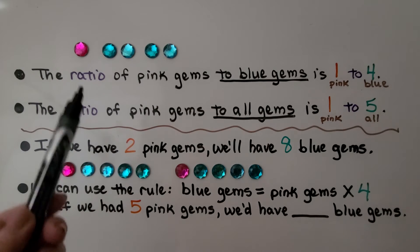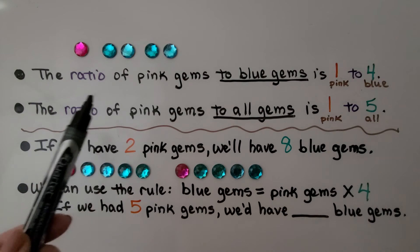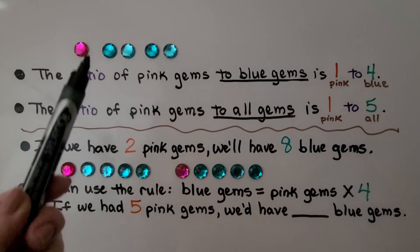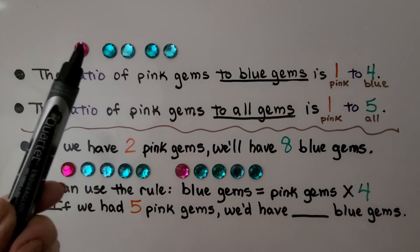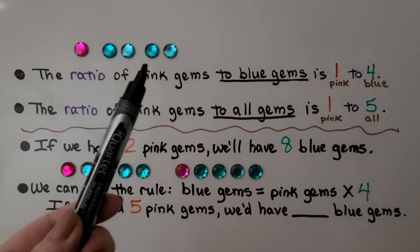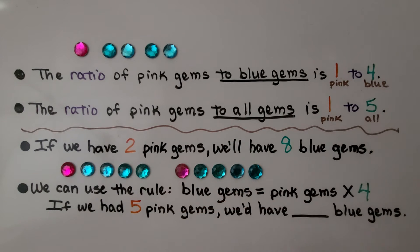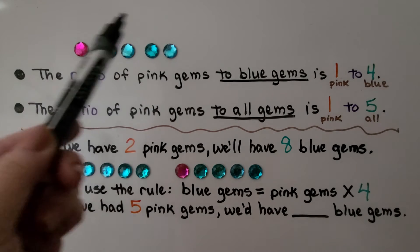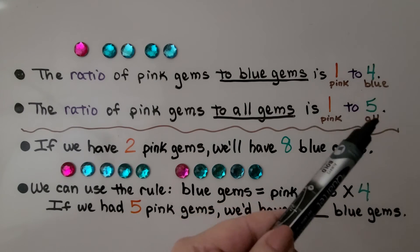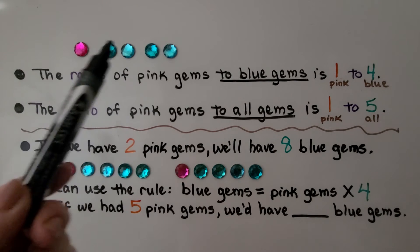Here we have one pink gem and four blue gems. The ratio of pink gems to blue gems is one to four — there's one pink, there's four blue. The ratio of pink gems to all gems is one to five. There's one pink gem and five in all.